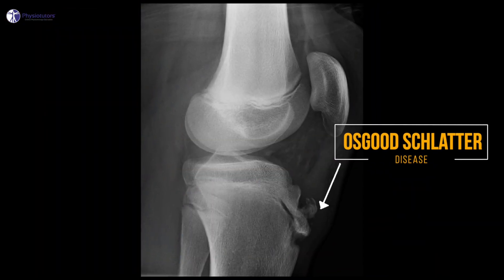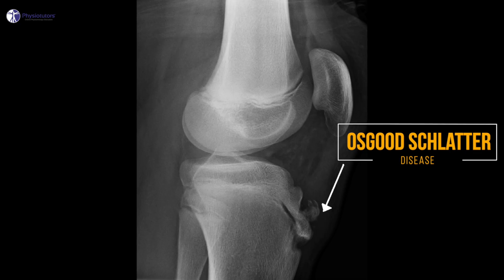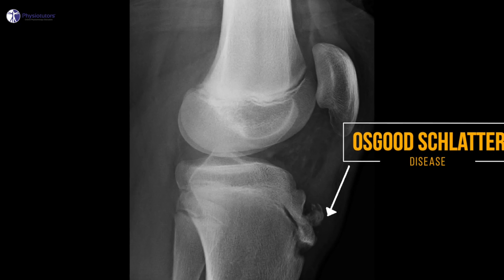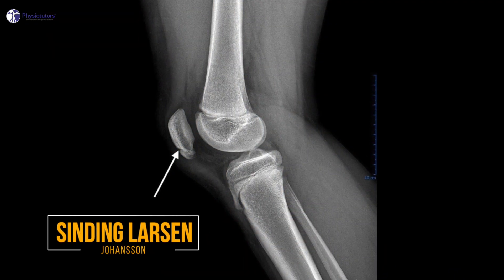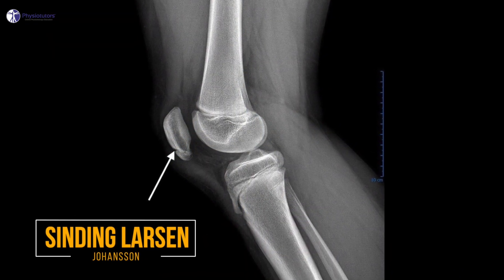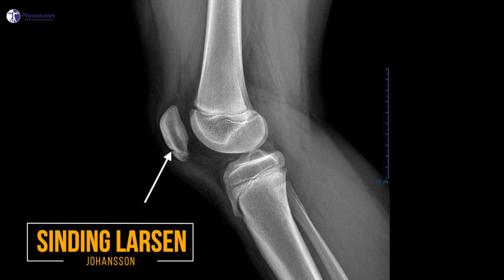In young athletes at the start of puberty, you'll have to keep growth plate pathologies in the back of your mind. The most common one is Osgood-Schlatter disease, an overuse injury characterized by ossification of bone along the growth plate at the tibial tubercle. In the most severe version, Osgood-Schlatter might result in an unfused tibial tuberosity growth plate. Sinding Larsen-Johansen is the equivalent of Osgood-Schlatter, only that the apex of the patella is affected.